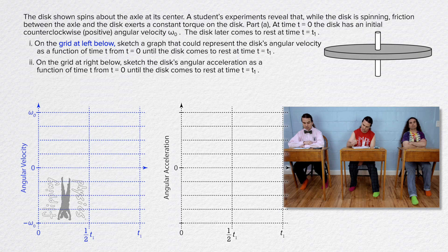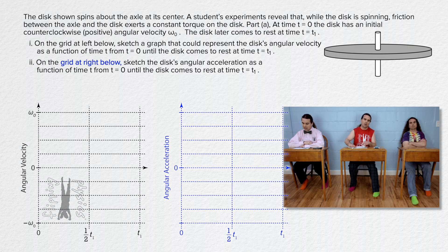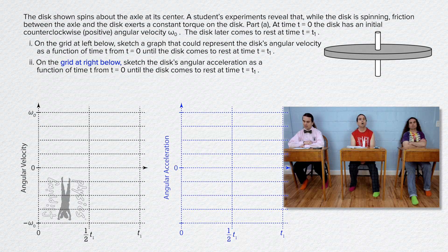Part AI. On the grid at left below, sketch a graph that could represent the disk's angular velocity as a function of time t from t equals zero until the disk comes to rest at time t equals t1. Part AII. On the grid at right below, sketch the disk's angular acceleration as a function of time t from t equals zero until the disk comes to rest at time t equals t1.